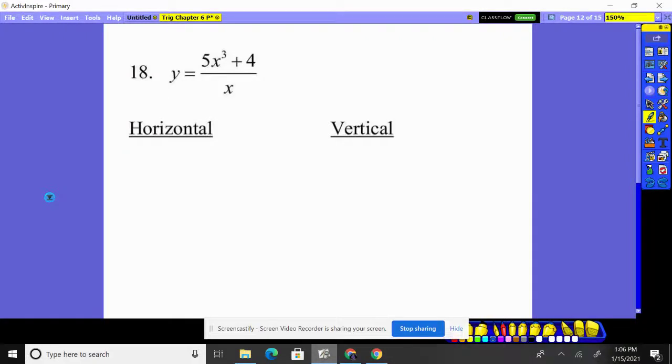Number 18, what's the horizontal asymptote? We always, for horizontal, think Bobo, botten, eats DC.